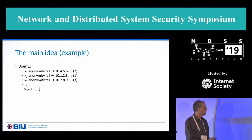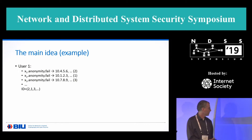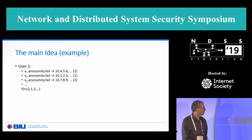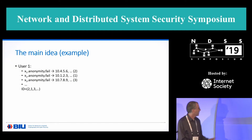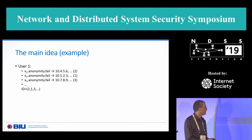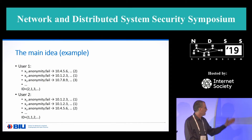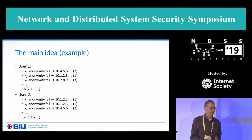In the case of x1, this list starts with 10.4.5.6. In the case of x2, this list starts with 10.1.2.3. And in the case of x3, it starts with 10.7.8.9. We encode each first IP in the list by a number: so 10.1.2.3 is 1, 10.4.5.6 is 2, and 10.7.8.9 is 3. And thus the ID for user1 is going to be 2, 1, 3, and so forth. Whereas for user2, assuming they get different resolution answers, the ID will be 1, 1, 2, and so forth. We'll see in a moment how all this is implemented and how the ID is calculated.